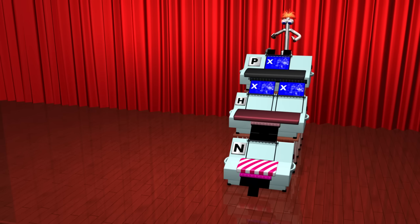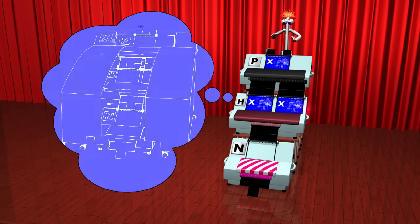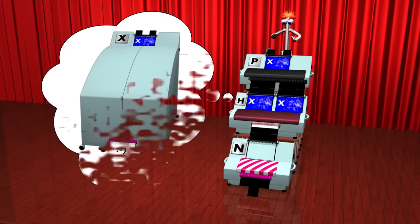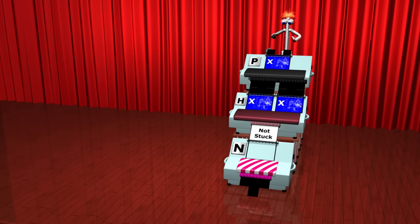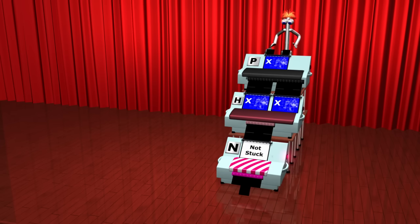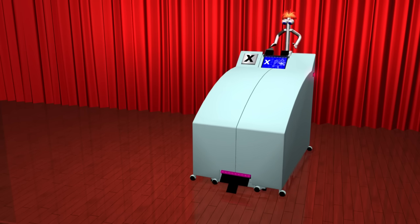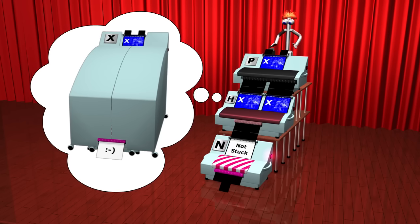P simply duplicates our input. H receives two copies of the blueprint of X. It should now determine what happens when X is fed with its own blueprint. Let's assume it says, not stuck. N negates that and gets stuck. So feeding X with its own blueprint causes it to get stuck. But H said it wouldn't. H was wrong.